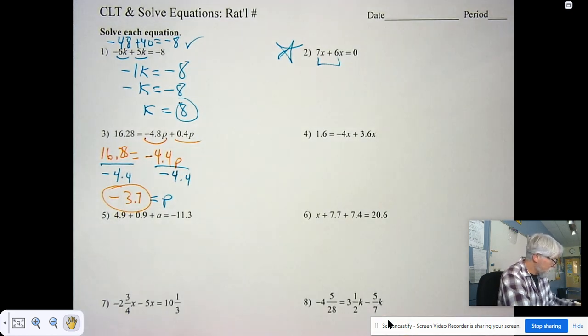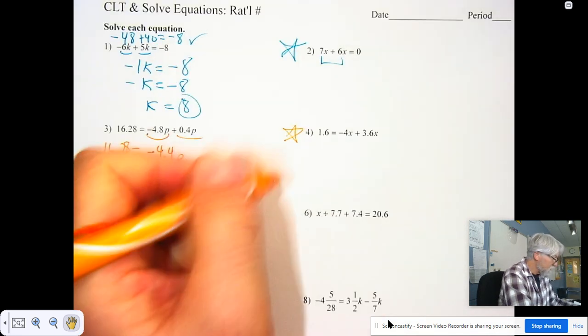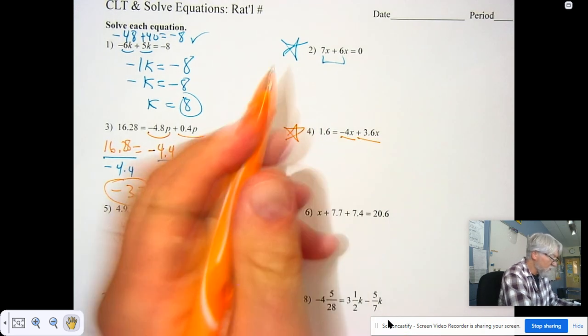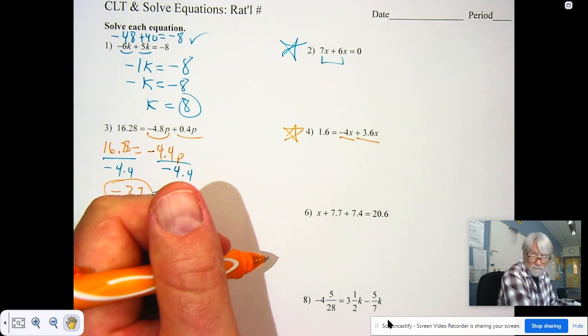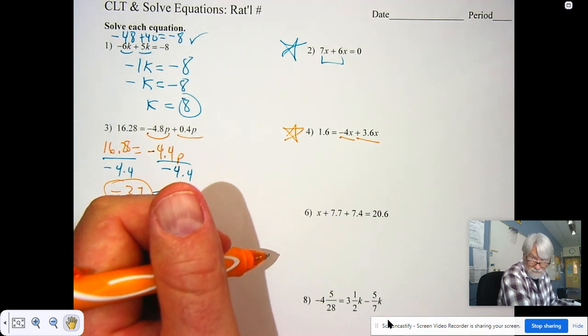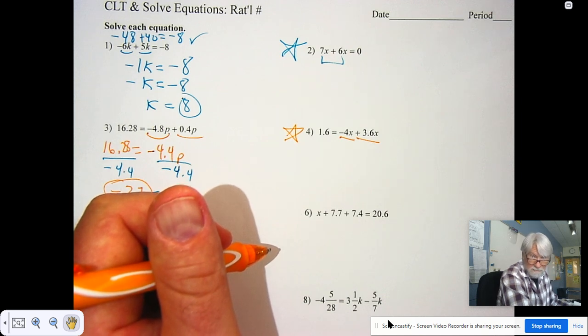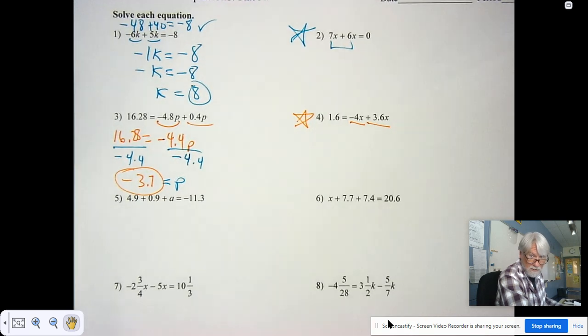That was a lot harder than I thought. So for number four, the one you're going to do, take negative 4x, combine it with your 3.6x, you're going to get less than 1x, well, in between zero and negative 1x, right? And you're going to divide 1.6 by that. Make sure you get the right signs when you put it in your answer.